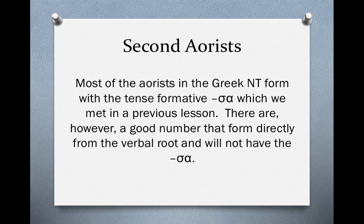Welcome to our study of second aorist in Greek. Most of the aorists in the Greek New Testament form with the tense formative sigma alpha, and we have already met this tense formative in a previous lesson. Just to refresh our memories, the aorist is the past tense in Greek which relates undefined action. Generally we can translate an aorist verb with the suffix -ed in English — for instance, 'I receive' in the present tense, or 'I received' in the past tense. Generally this kind of action is indicated by the sigma alpha in Greek.